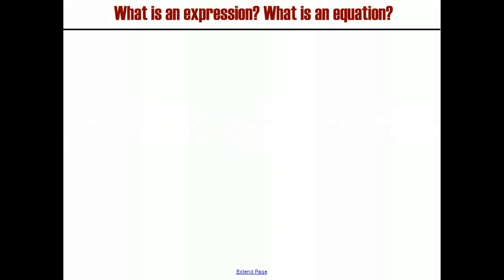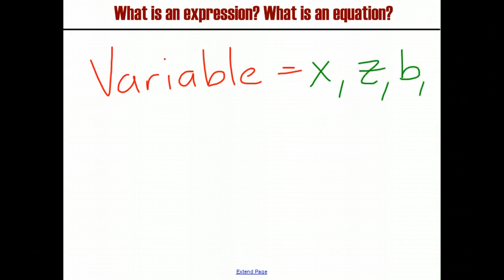But first, before we can write them, we have to understand what they are. And before we get into what they are, we need to have one definition real quick. A variable. A variable are things like X, Z, B, etc. They're just letters that stand in for numbers. They represent some unknown number, but it's still important to what we're talking about or what we're solving. So we use the letter to stand in for that number.